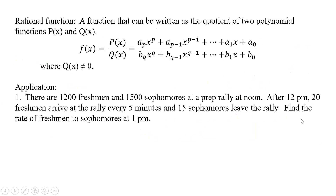Now, rational functions are really what this section is about. A rational function is a function that can be written as the quotient of two polynomial functions p and q: f of x equals p of x over q of x, where those are polynomials in the numerator and denominator. Of course, q of x cannot equal zero, otherwise we'd be dividing by zero, which is not allowed.